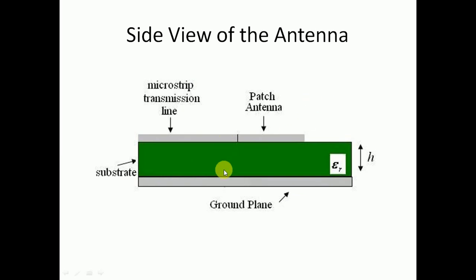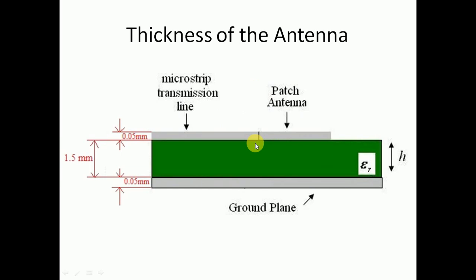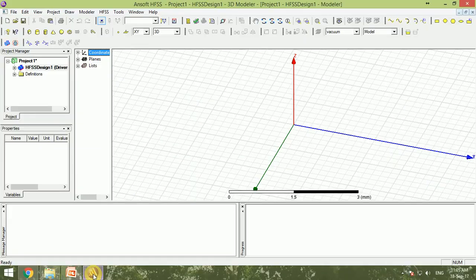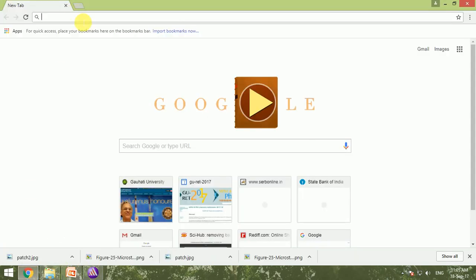Looking at the side view: the green color is the substrate, below it is the ground plane, and on top is the microstrip transmission line and the patch. Most commonly used PCBs have a substrate thickness of 1.5 mm and the copper sheets on top and bottom have a thickness of 0.05 mm. We place the antenna so that the top layer lies at z = 0 (the XY plane). The copper patch starts at z = 0 and goes to z = 0.05 mm; the bottom of the substrate is at z = −1.5 mm and the bottom of the ground plane is at z = −1.55 mm.